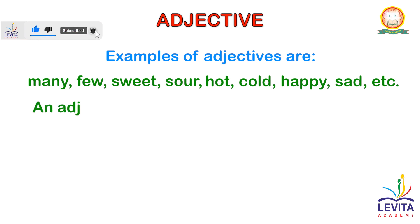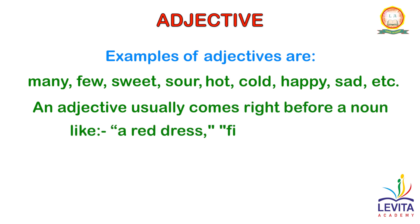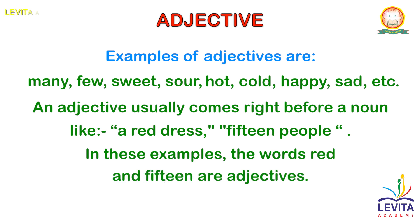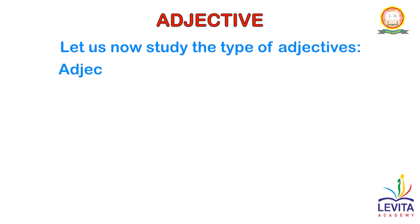An adjective usually comes right before a noun, like a red dress or 15 people. In these examples, the words red and 15 are adjectives. Now let us study the types of adjectives. Adjectives are of eight types.